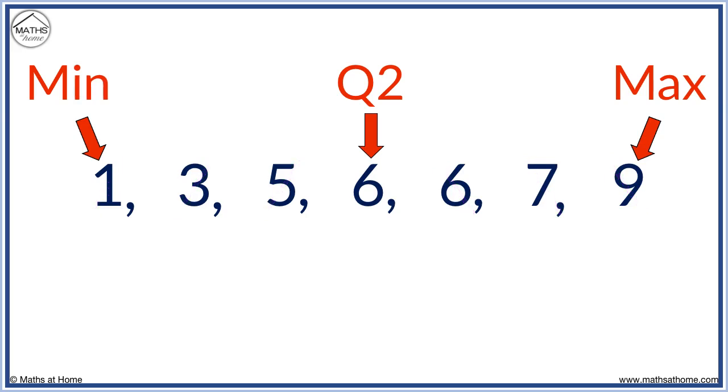Now we find Q1. We look at the data on the left of the median, but we do not include the median. We find the median of these numbers by crossing off each end. We have three. Q1 is three.